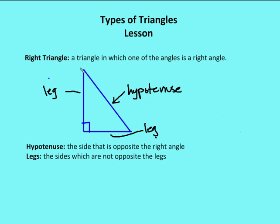Right triangles are triangles in which one of the angles is a right angle. In a right triangle, the side opposite the right angle is called the hypotenuse. If I draw a line from the right angle to the opposite side, that side — not adjacent to the right angle — is the hypotenuse. The two remaining sides adjacent to the right angle are called the legs of the right triangle.